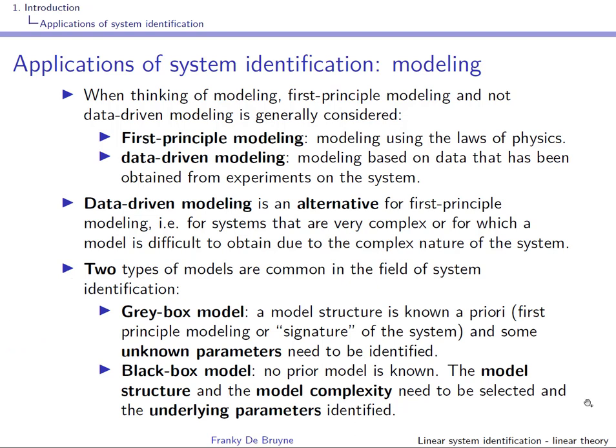In some cases the process is not well known because it's complex, or you have done experiments but not with a step input, so you cannot recognize the signature. No prior model is known. Then we use a so-called black box structure with a given complexity, and black box data-driven modeling is really the identification of the underlying parameters. We'll encounter model structures such as ARX and output error models.